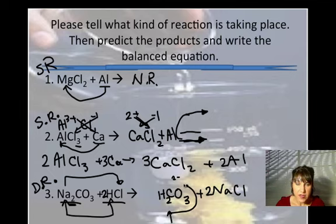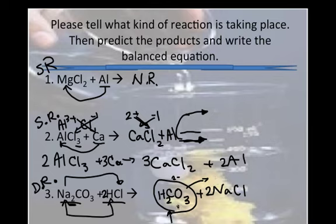You see, whenever a carbonic acid is formed as a product, it breaks down even further. So this is just not quite the right reaction yet. Let's break this apart. What we're going to get, instead of H₂CO₃, we're going to get water and carbon dioxide. Just like when we did the Mentos experiment. Carbon dioxide.